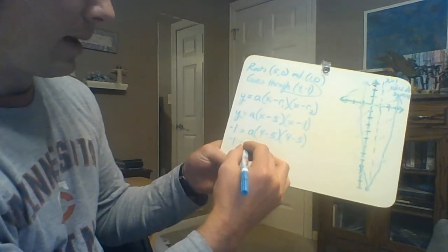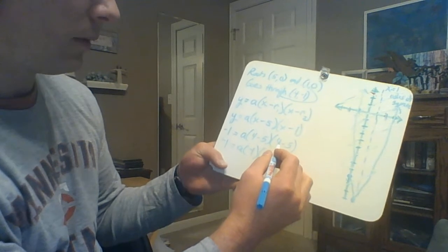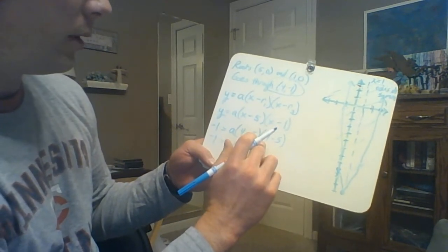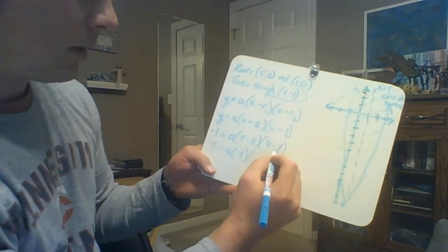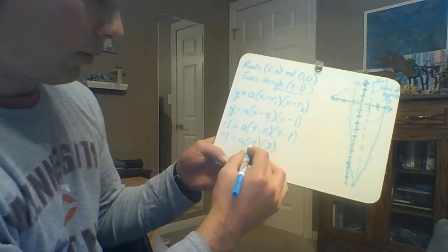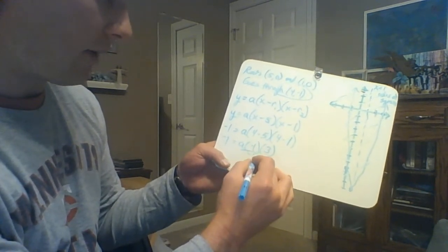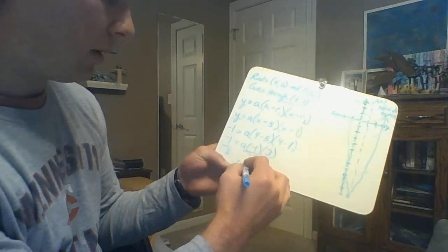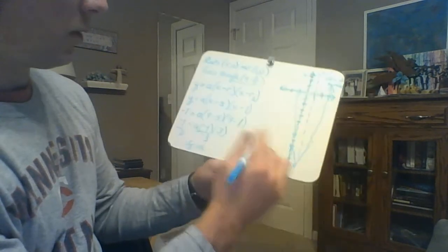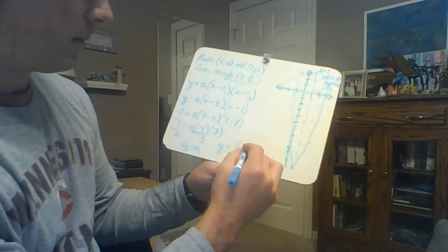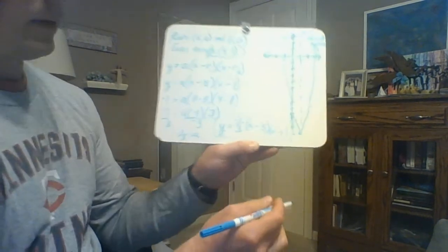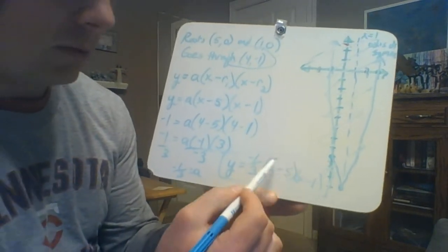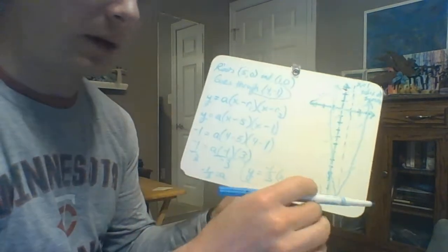Solving for a: negative 1 equals a times (4 minus 5)(4 minus 1), which is a times (negative 1)(3), so negative 1 equals negative 3a. Dividing both sides by negative 3 gives a equals negative one-third. So the equation is y equals negative one-third times (x minus 5)(x minus 1). That is factored form; if you want standard form, you foil it out. We need to be able to go from one form to the next.